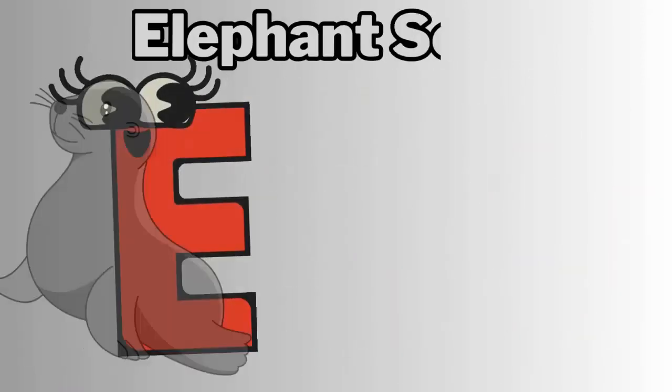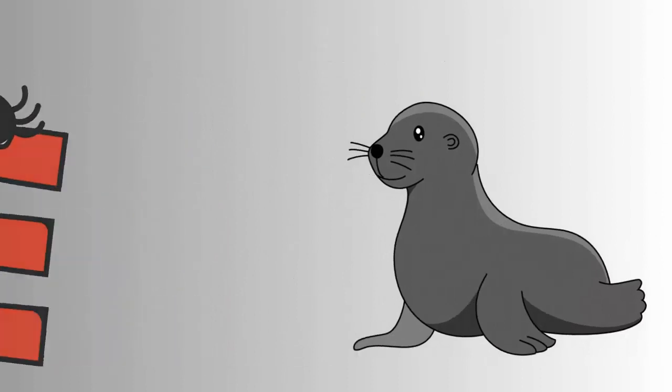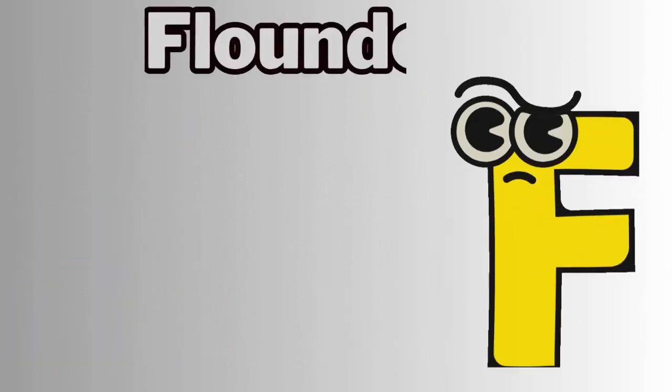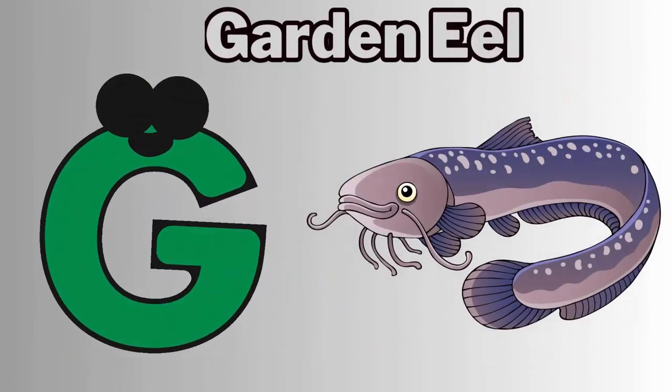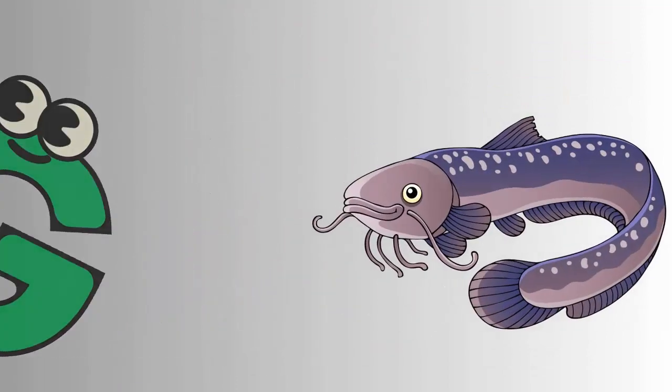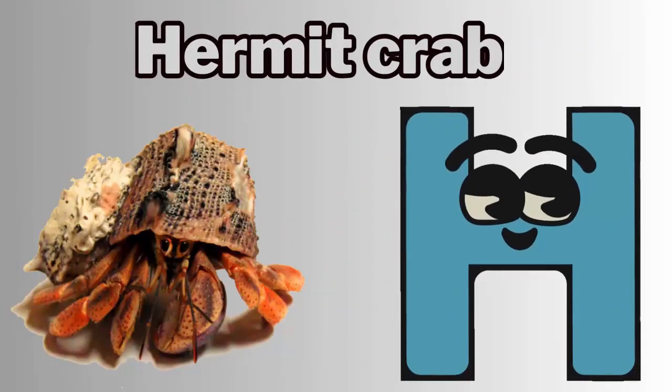E for elephant seal. F for flounder. G for garden eel. H for hermit crab.